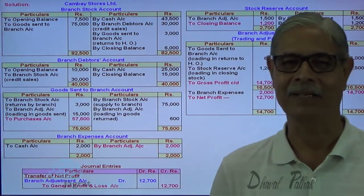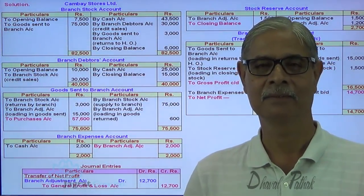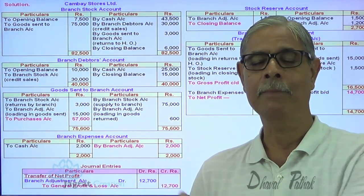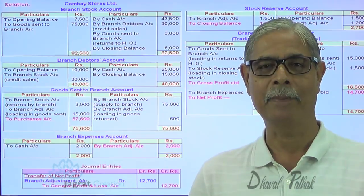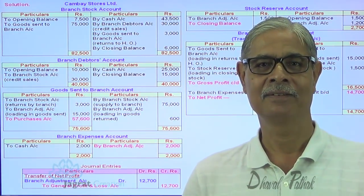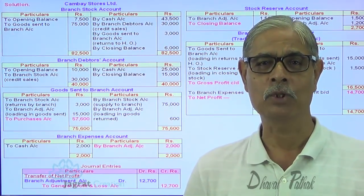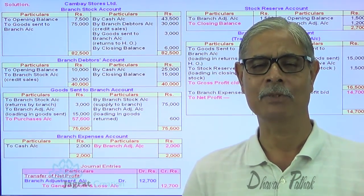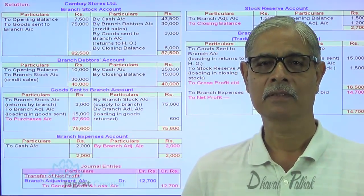The adjustment entries are now complete. While recording entries in these accounts, the journal entries have also been presented. The preparation of the branch adjustment account and branch stock account has been explained with repetitions to make the concept clear in the minds of students. For a teacher, making a concept clear initially may require repetition, and students are requested to permit that. This concludes the theory lecture on the stock and debtors system.